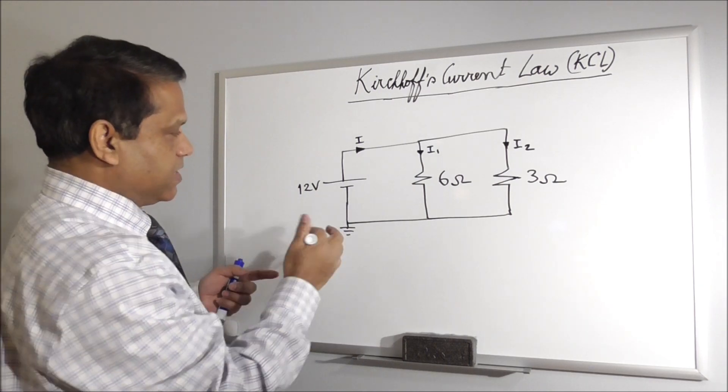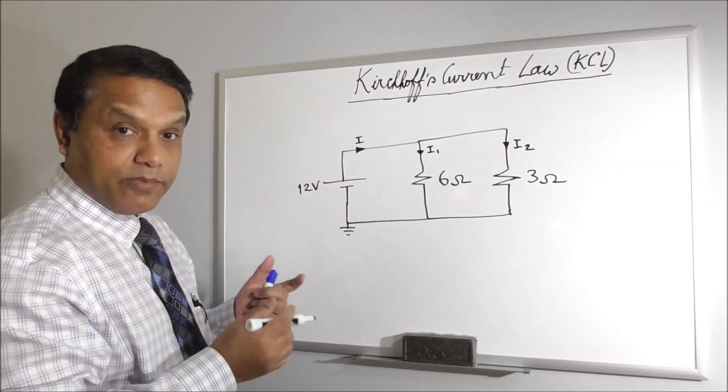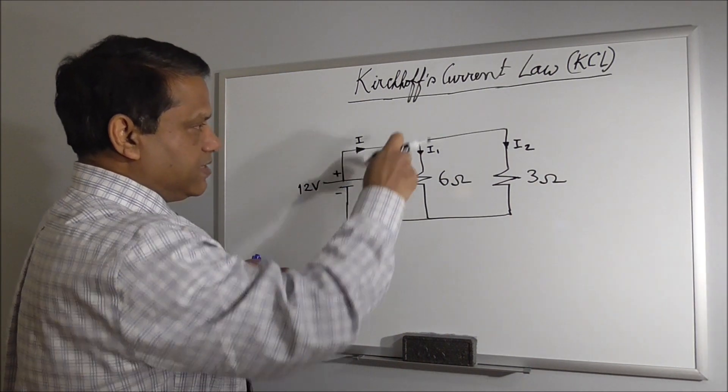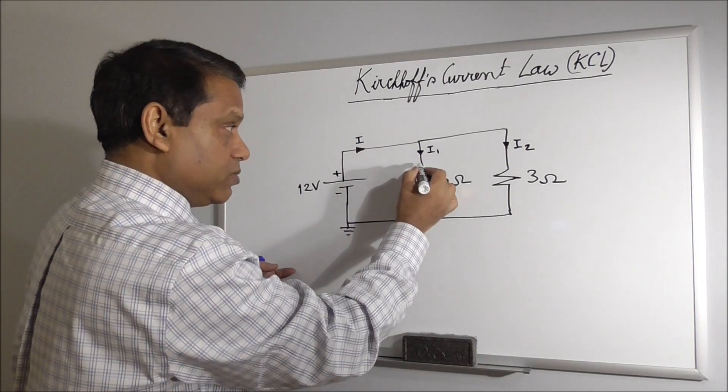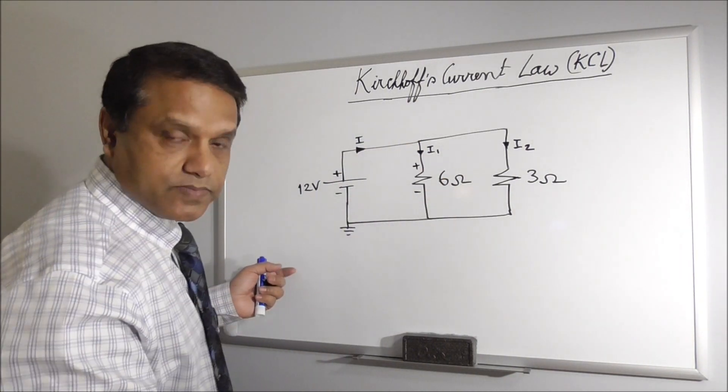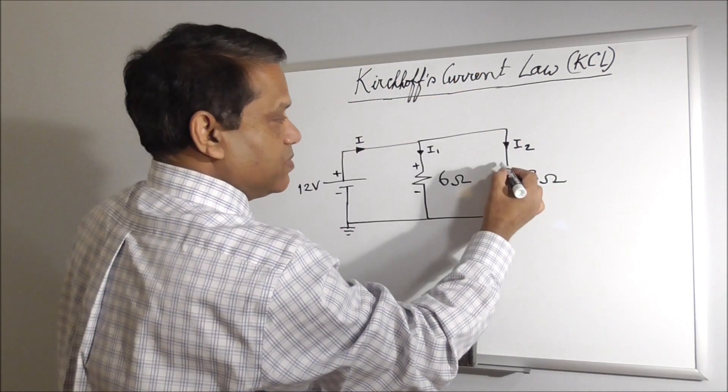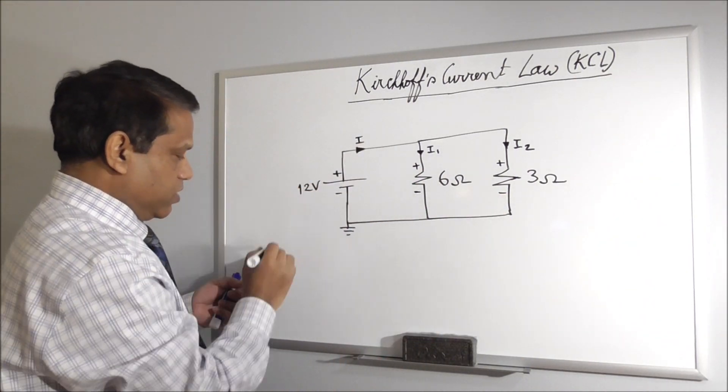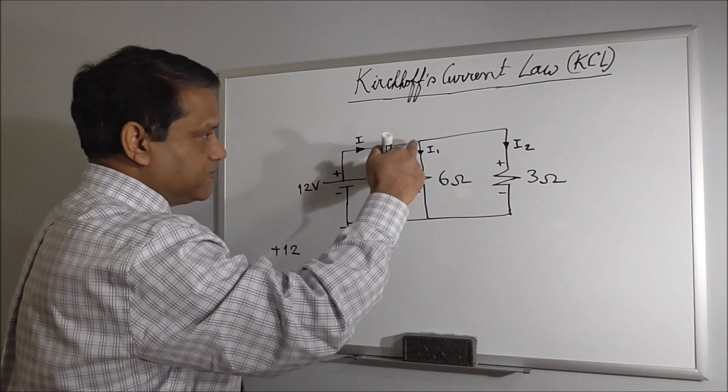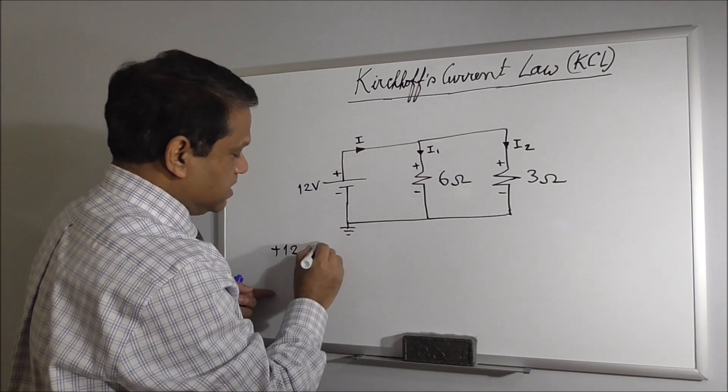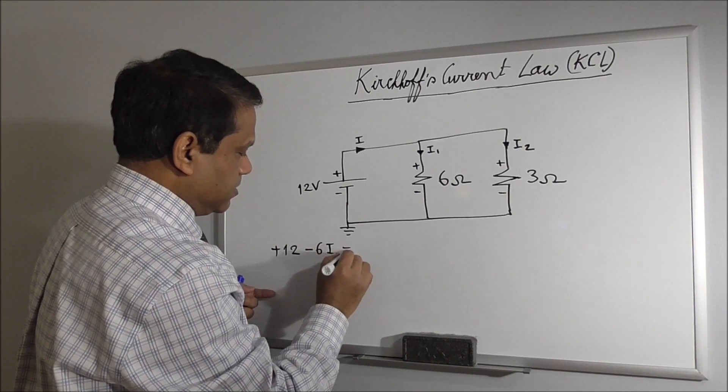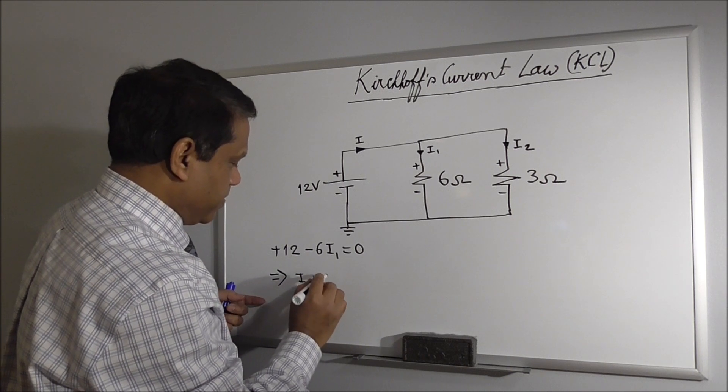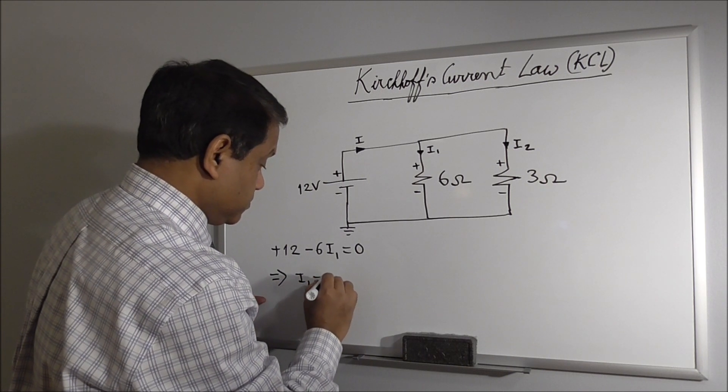So we start from the ground node. I write voltage drops as negative and voltage rises as positive. So we write it is plus minus. It is voltage rise. And since we assume the current here is downward, it has to be plus at the top, minus at the bottom. Similarly, current here is downward. So that means plus at the top, minus at the bottom. We write KVL here, it will be plus 12 then minus 6 I1 equal to 0. So that will give I1 is equal to 2 Ampere.